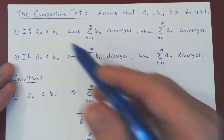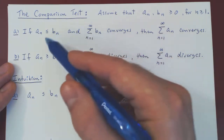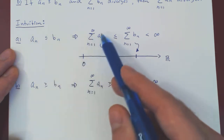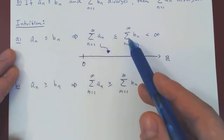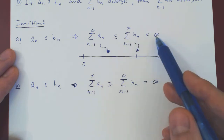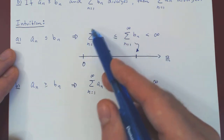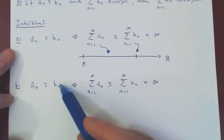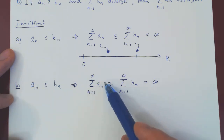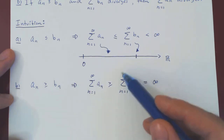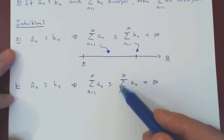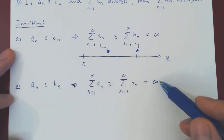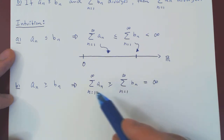You can really ignore the two formal statements and only concentrate on the intuition. If an is at most bn for every n, then the sum of the smaller terms is at most the sum of the bigger terms. If the series of bn is finite, then so is the series of an, and a series of positive terms that is finite converges. Now if an is larger than bn for every n, the series of the larger terms will be larger than the series of the smaller terms. If the series of bn diverges — being a series of positive terms — it can only do so by being unbounded, blowing up to infinity, and so the larger series must blow up as well.